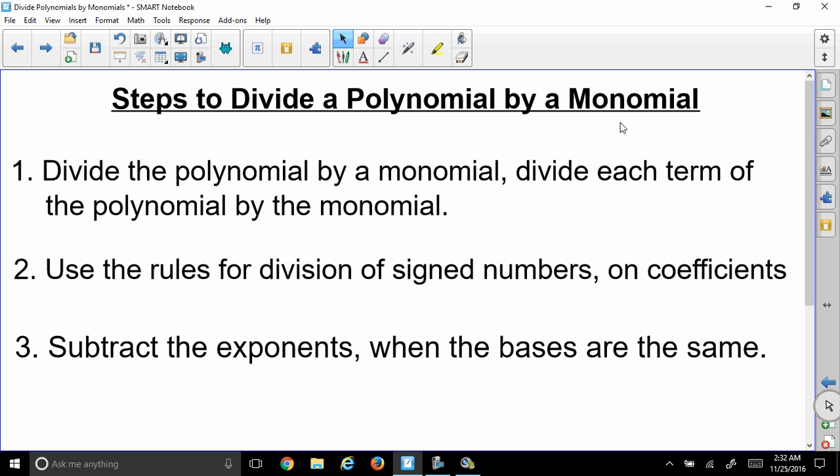Steps to divide a polynomial by a monomial: Divide each term of the polynomial by the monomial. Use the rules for division of signed numbers on the coefficients. Subtract the exponents when the bases are the same.